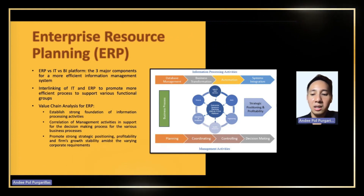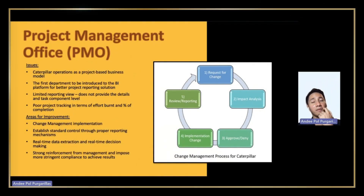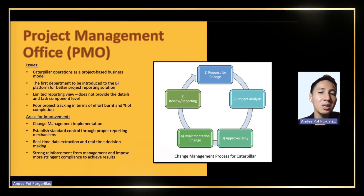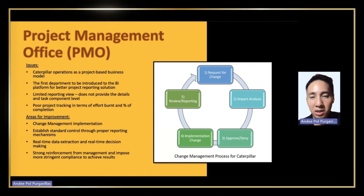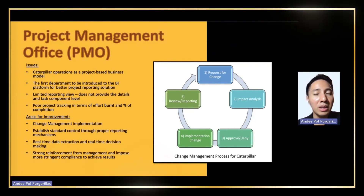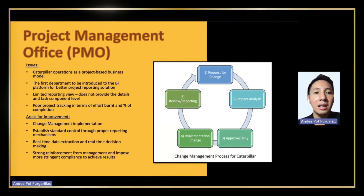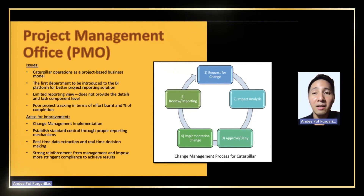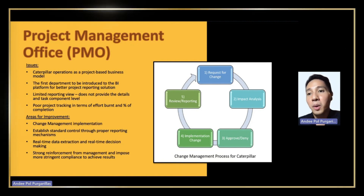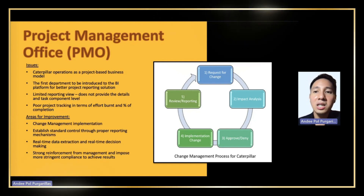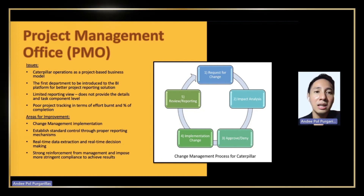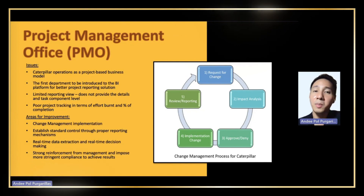Next in the case, we have the PMO — the project management office. The areas for improvement we identified include implementing a change management initiative to transition to a better reporting mechanism, enabling real-time updates and status tracking for each project. In order to achieve this, there must be strong management reinforcement and stricter compliance. Without proper management push, this initiative will not come to fruition. That concludes this section.